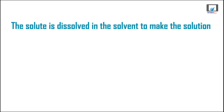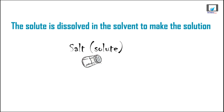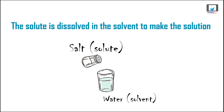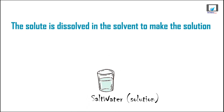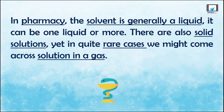A quite common example used here is salt water: the salt, which is the solid solute, is dissolved in water, which is the liquid solvent, to form a salt water solution. In pharmacy, the solvent is generally a liquid — it can be one liquid or more. We also have solid solutions, which we will deal with later. Yet in quite rare cases, we might also have solution in a gas.